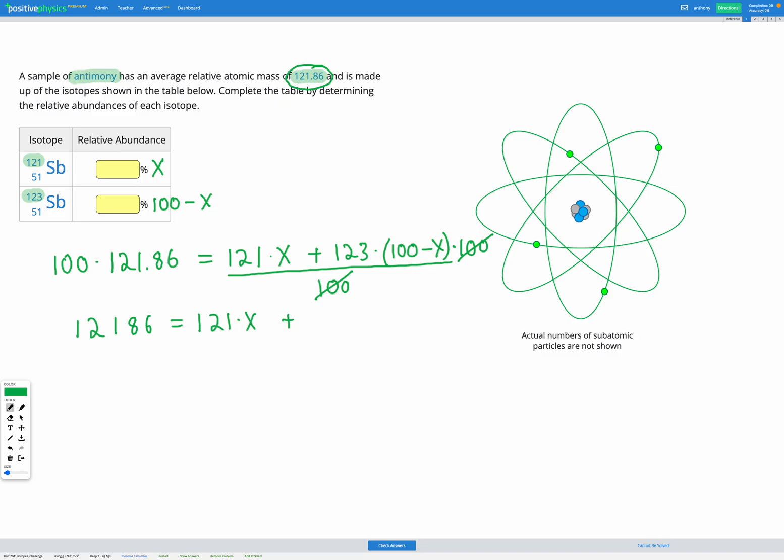But I'm going to multiply out my brackets here. So I had 123 times 100. So that's 12,300 minus 123x.